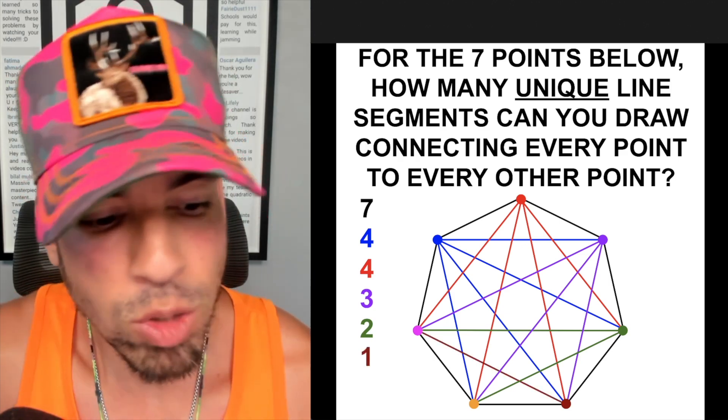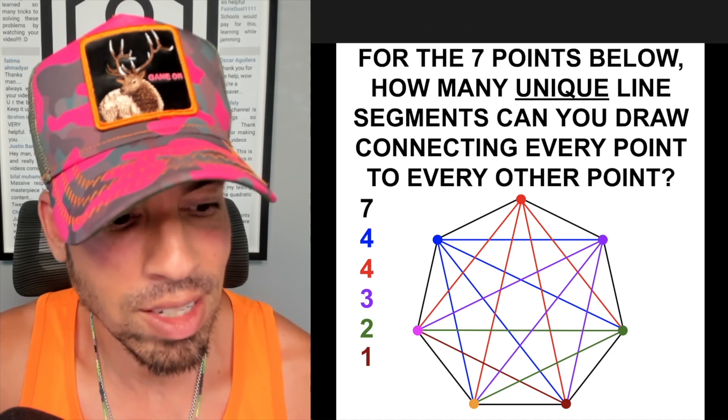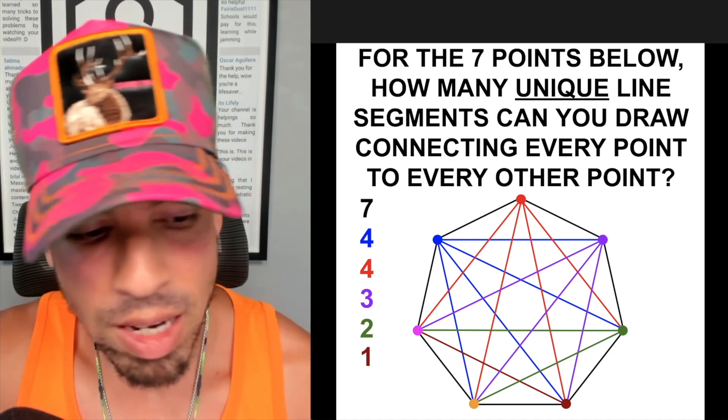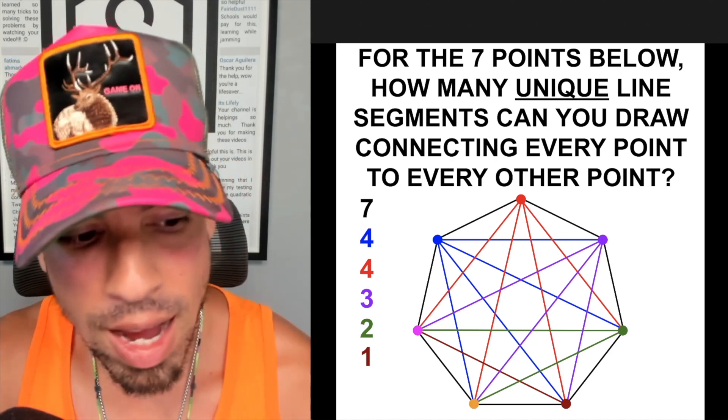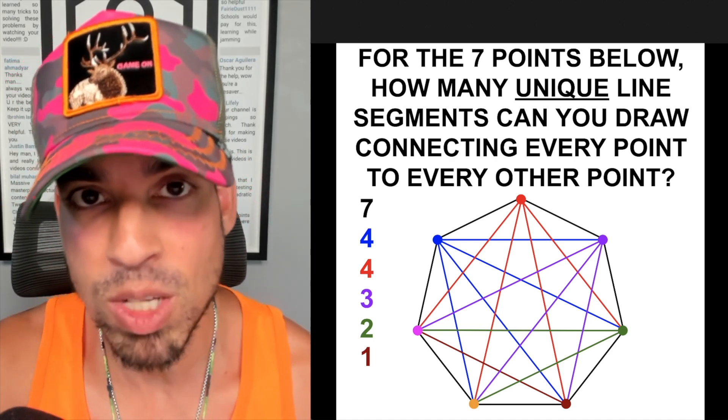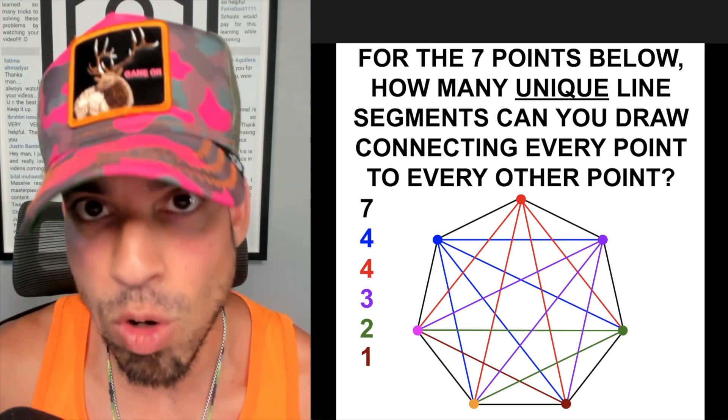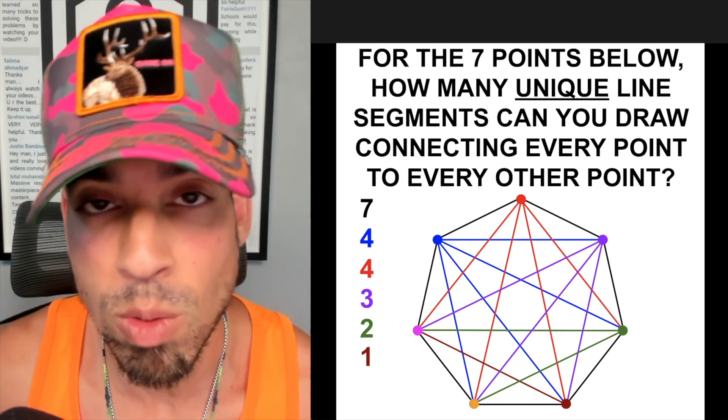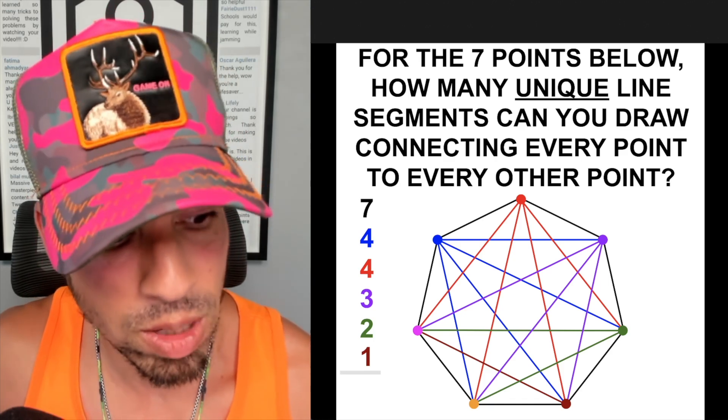And last but not least, we're going to go to this dark brown and we've got one line to that pink color. Once we get to the orange and to the light purple, we already have lines connecting them between every other point so we're done. There's nowhere else to go.